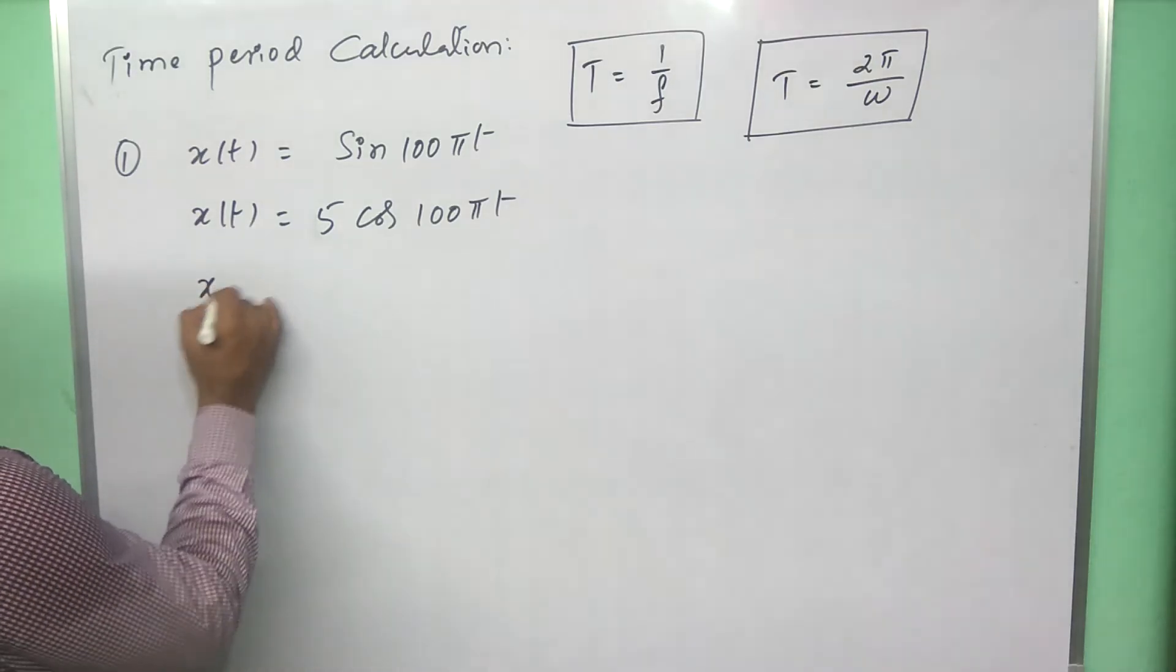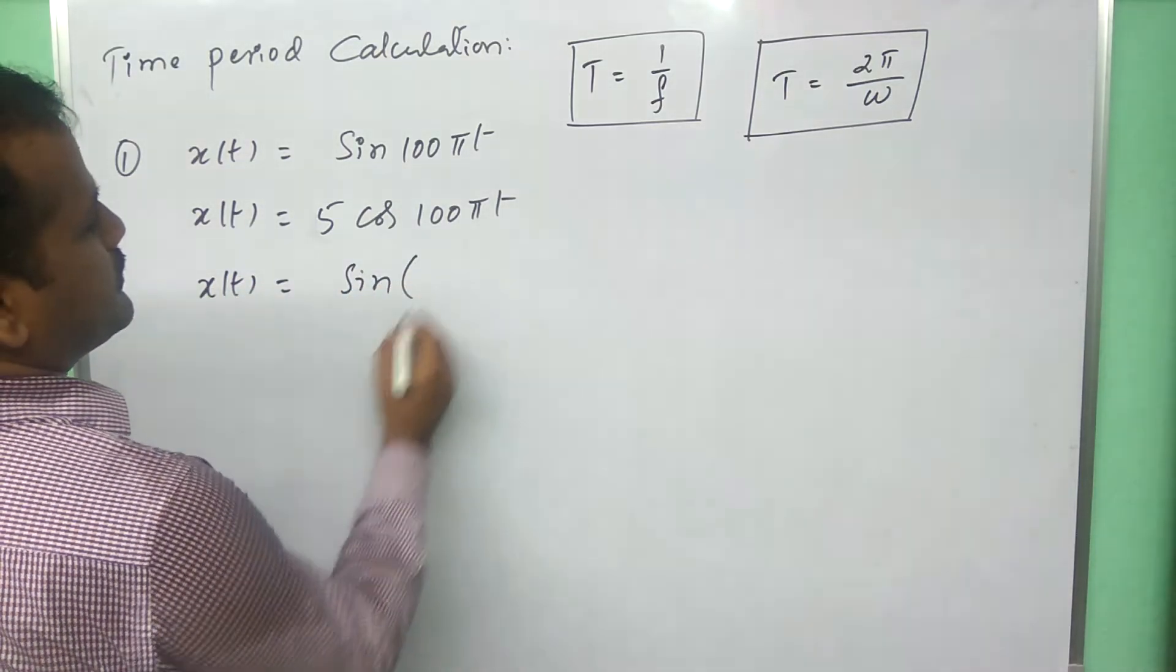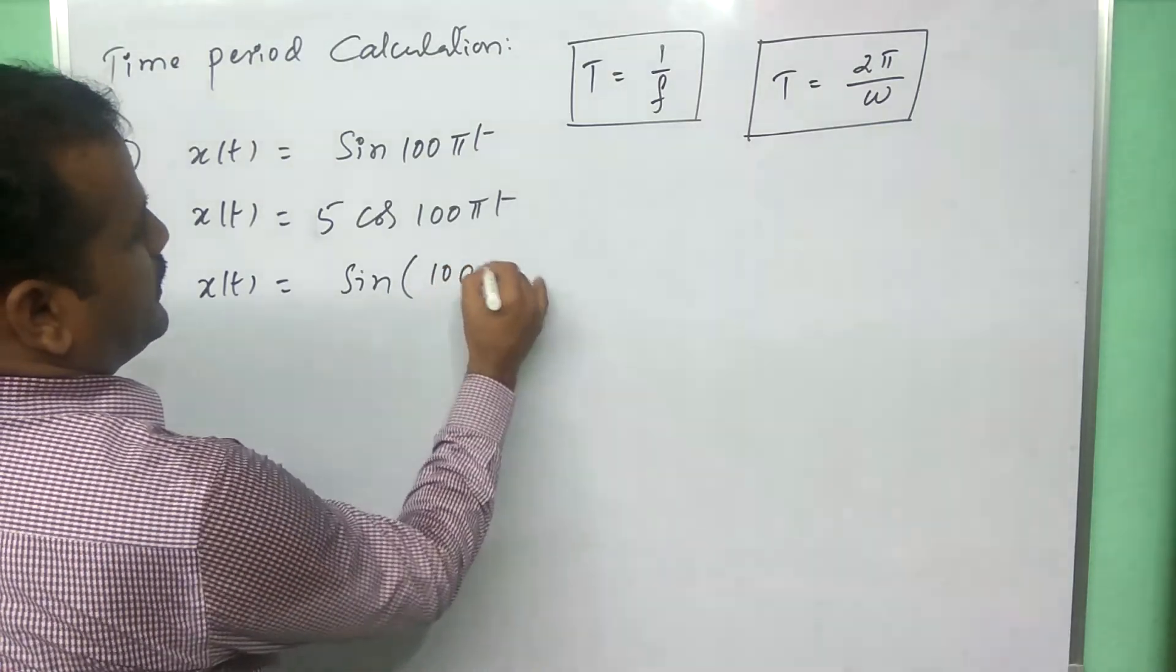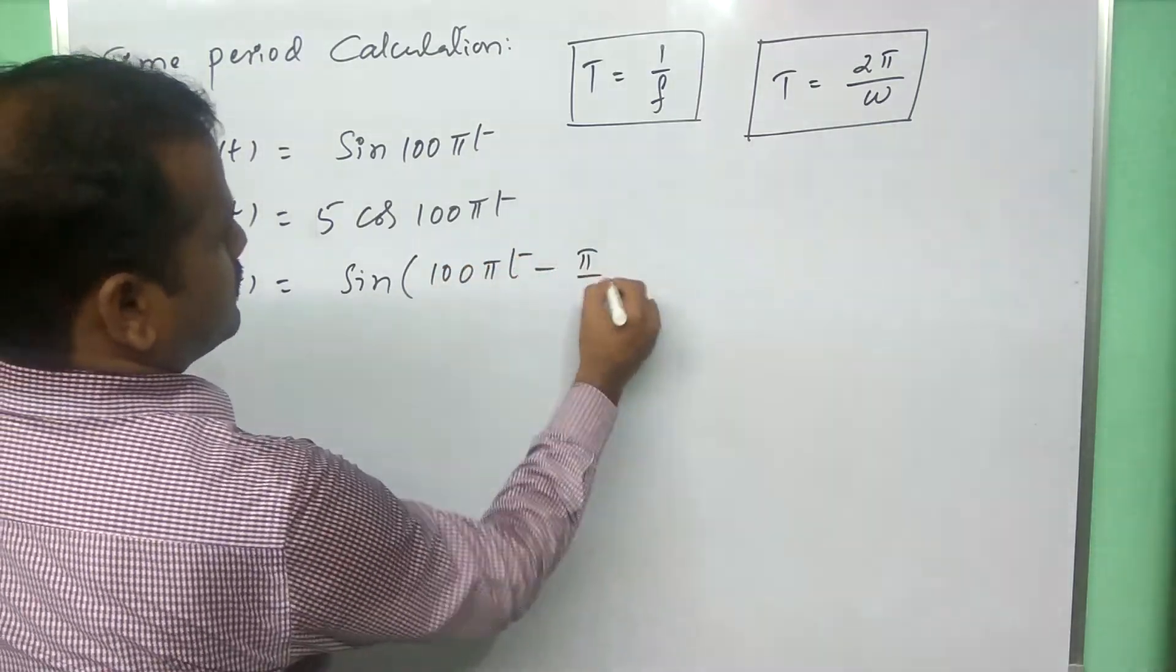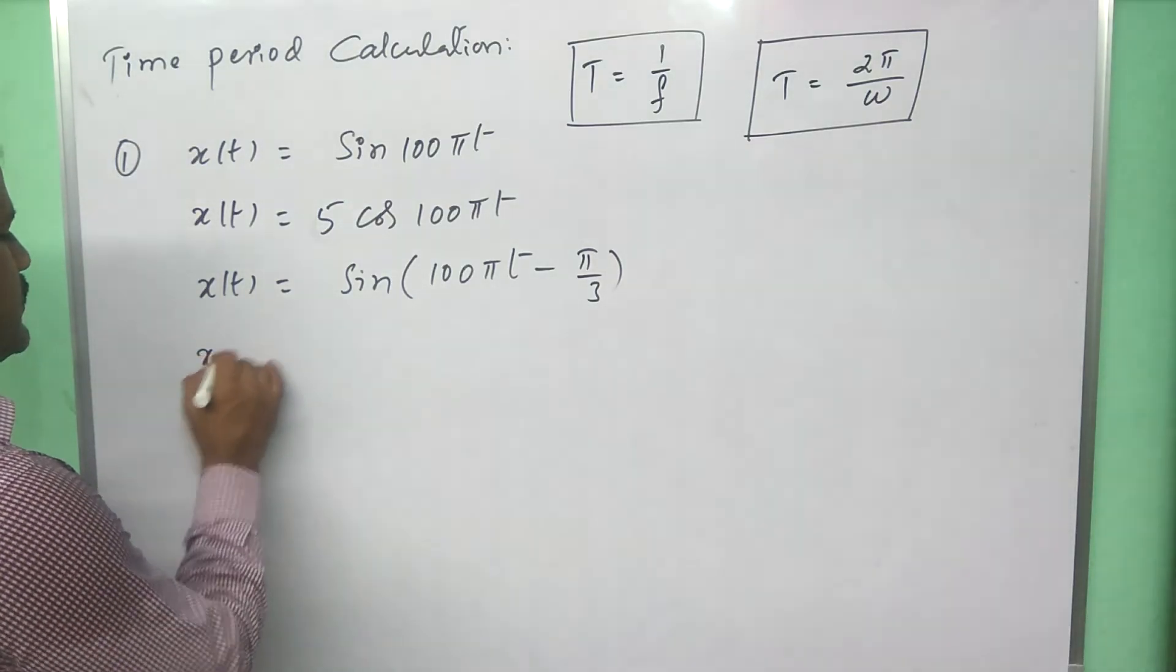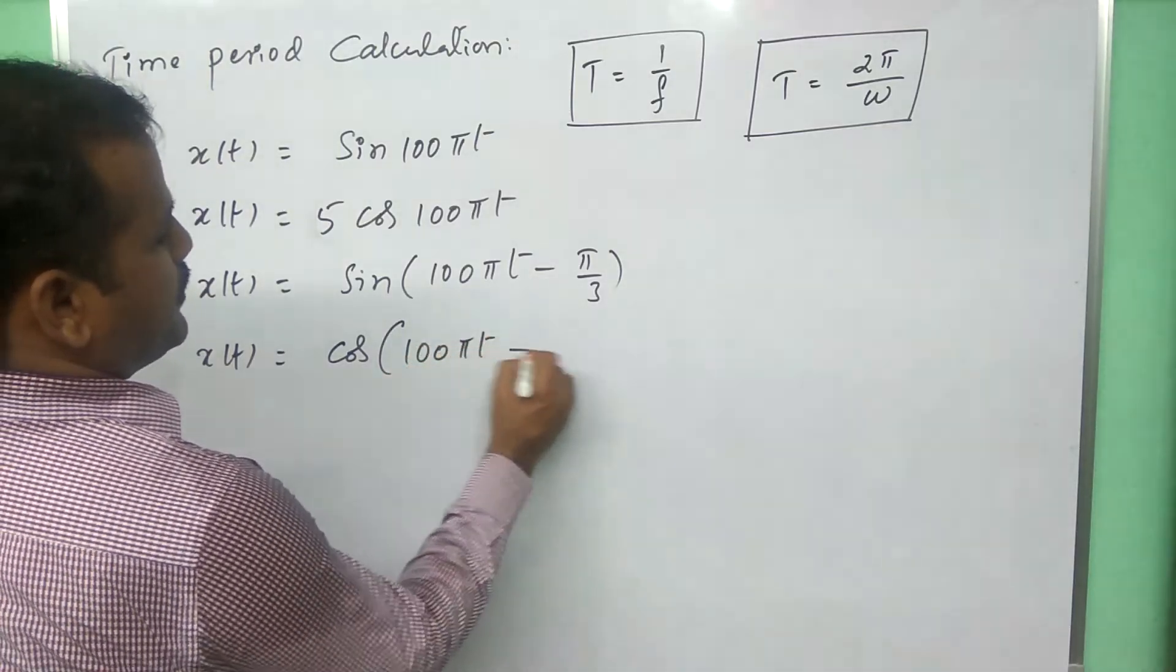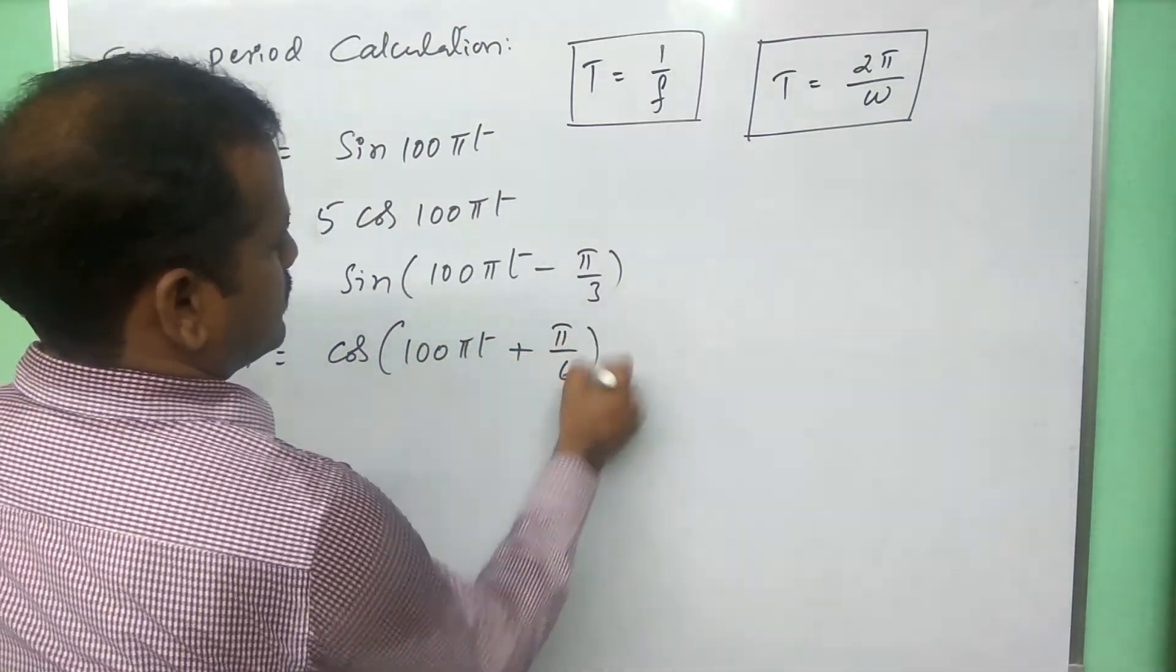Or X of t sine 100 pi t minus pi by 3. Or cos 100 pi t plus pi by 6.